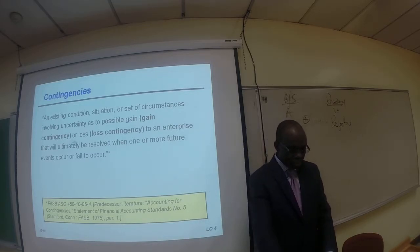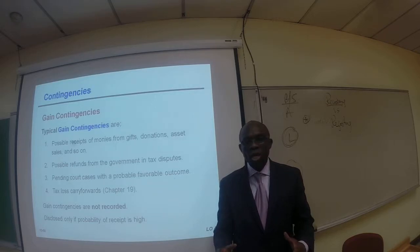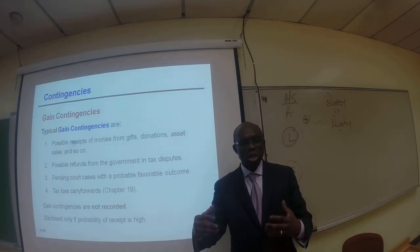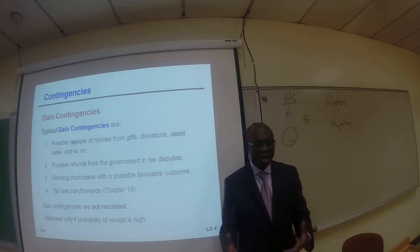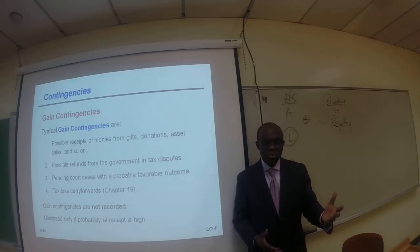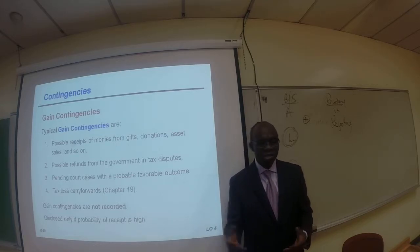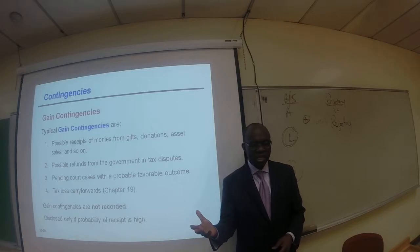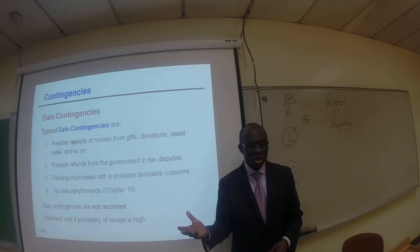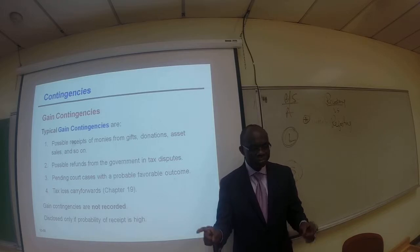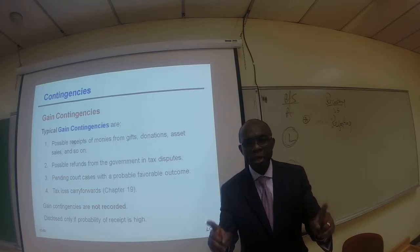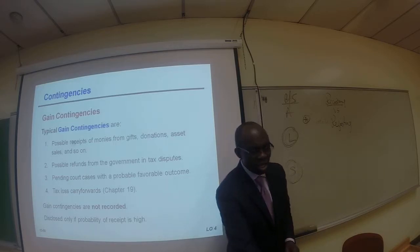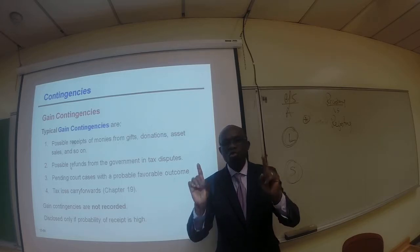So the question is how do we record and report contingencies? Let's take a look at the accounting rules. Number one: gain contingencies. Typical gain contingencies include possible receipt of monies from gifts, donations, asset sales, possible refund from the government in a tax dispute, and tax law carry-forwards, and so on. One important rule to note here is that gain contingencies are not recorded.